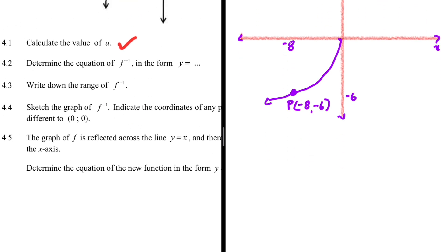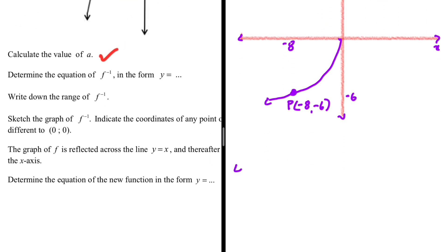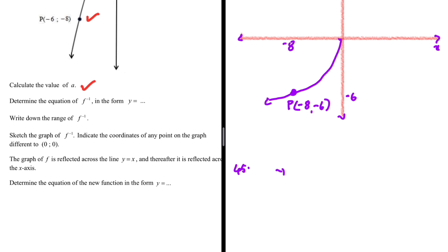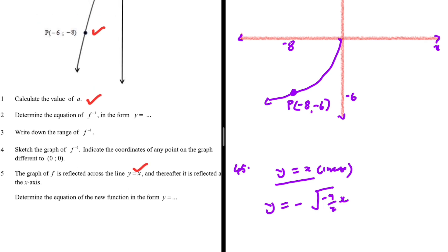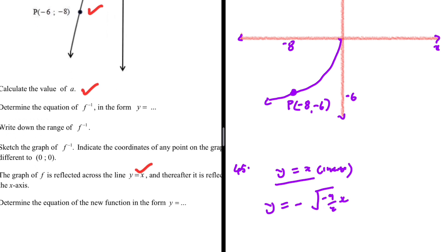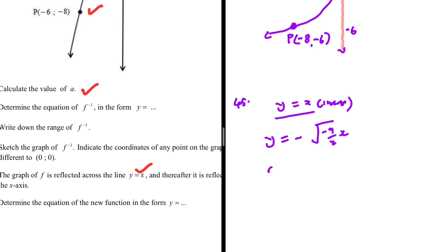Question 4.5: the graph of f is reflected across the line y equals x. Reflecting across y equals x produces the inverse, which we already know is y equals minus the square root of (minus 9 over 2 times x). The graph is then reflected across the x axis. So we have taken care of the y equals x reflection — now let's address the reflection across the x axis.